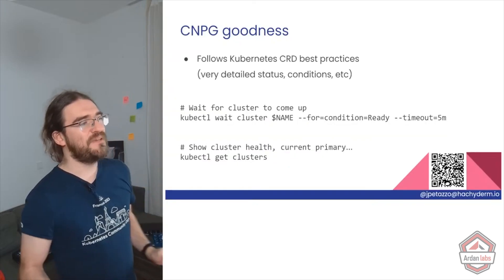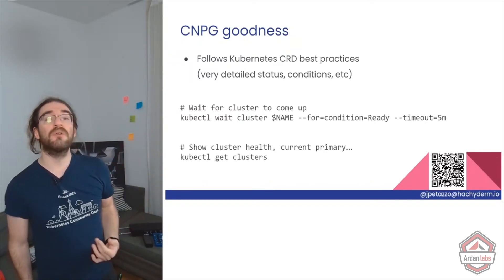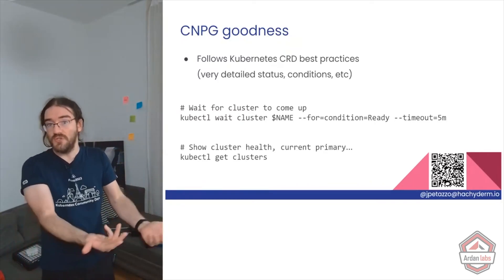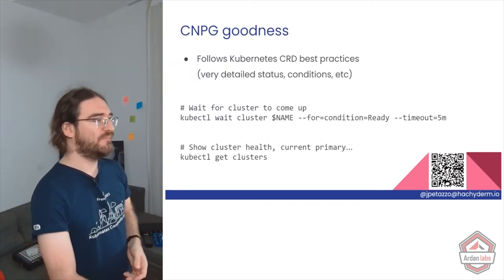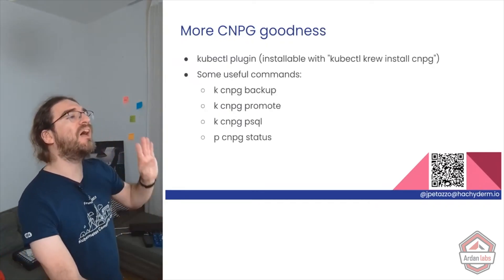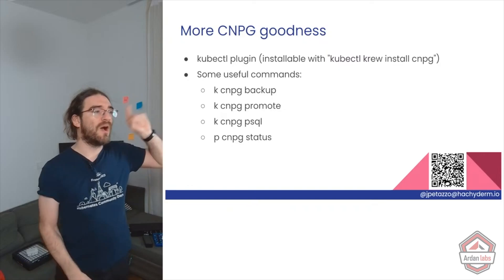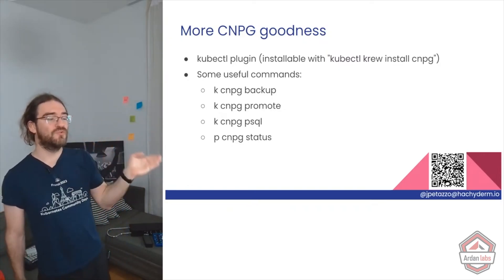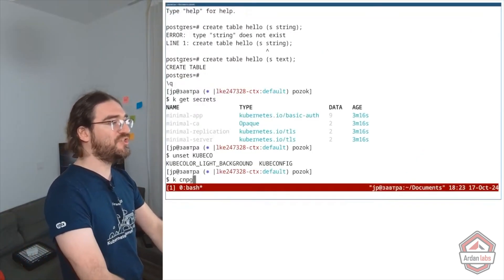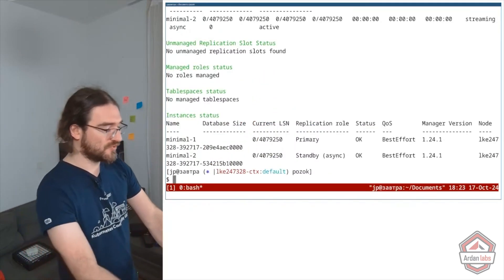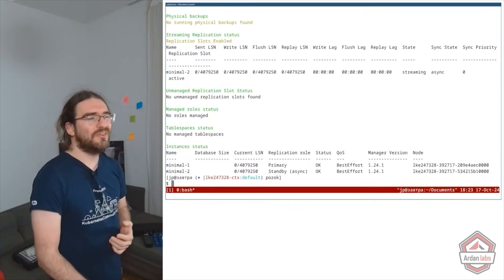CNPG follows GitOps best practices. In concrete terms, you can use kubectl wait to wait for the cluster to come up, making scripting really easy. My top four CNPG commands are: one-shot backup, promote for failover or switchover, psql, and status. Status gives you a huge amount of information about the cluster state.